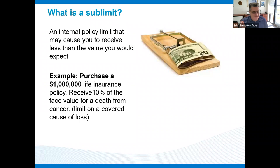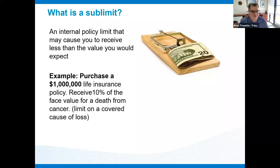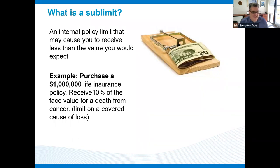A sublimit is an internal limit on an insurance policy that's not easy to see. I use an example of life insurance: if you went out and bought a life insurance policy and somewhere in the fine print it said if you died of cancer, it would only give you 10% of the million dollars — that wouldn't be a great way of protecting your family. Property and casualty insurance has a lot of those types of sublimits, and it's important to read your contracts and know what you're buying.